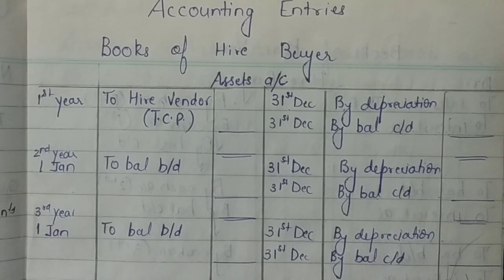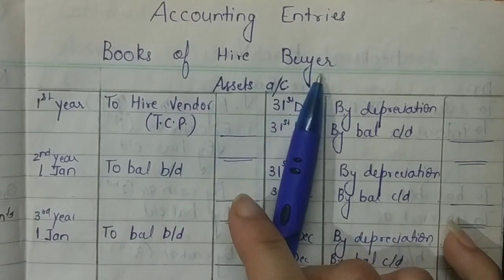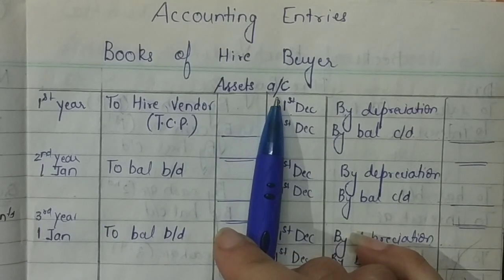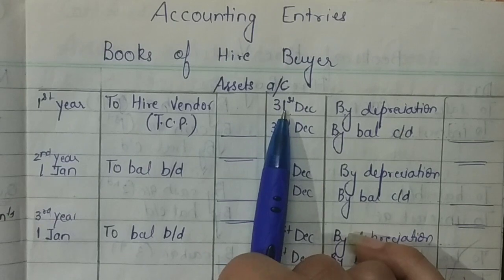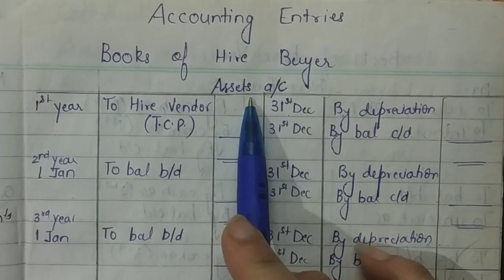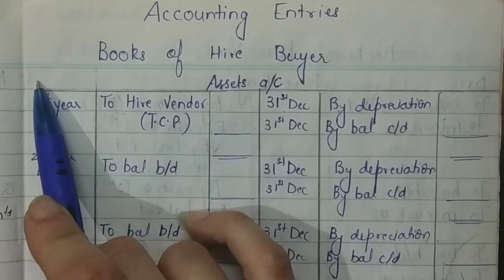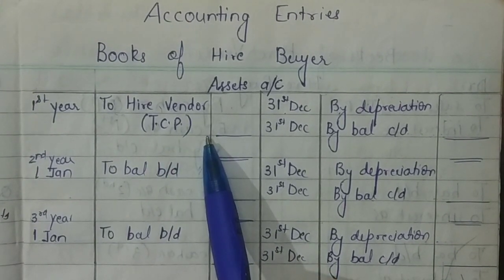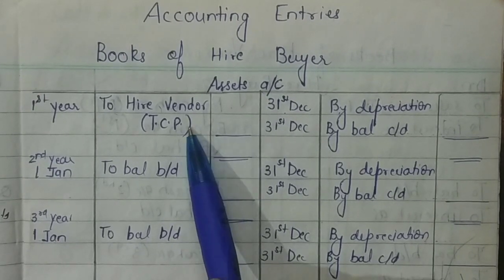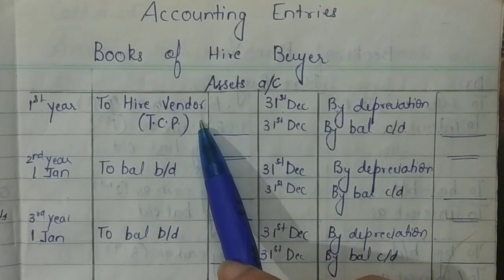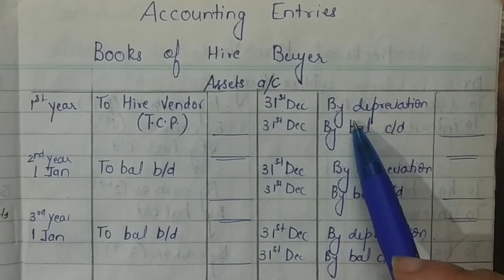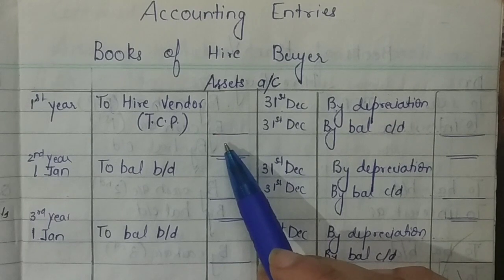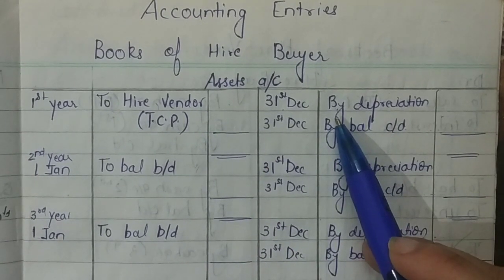Now let's see how the ledger account will be prepared. First I am showing you the books of the hire buyer. The hire buyer will make two accounts: first, the asset account for the asset purchased on hire purchase; and second, the hire vendor account from whom the goods were purchased. The asset account will be debited to hire vendor, recorded at the total cash price — not the hire purchase price. Depreciation will then be charged at the given rate and method, for however many months the asset has been held, since it may have been purchased in January, June, or September.